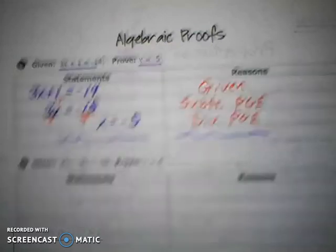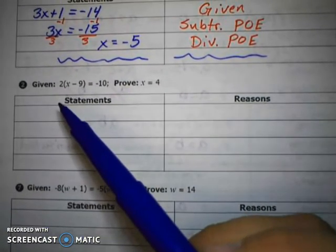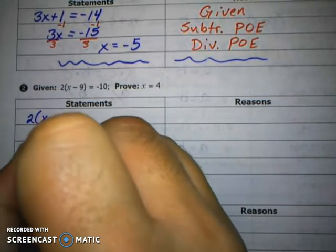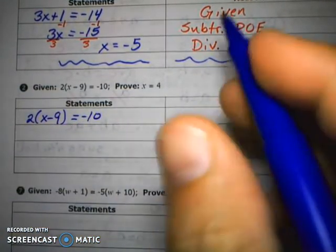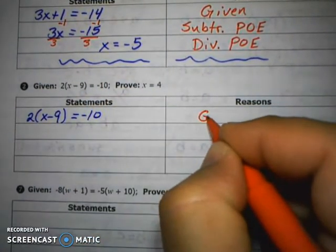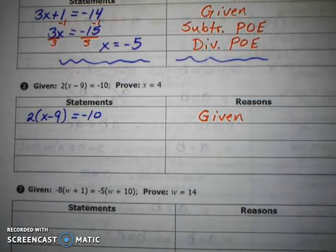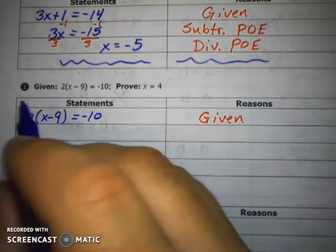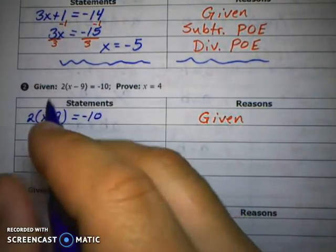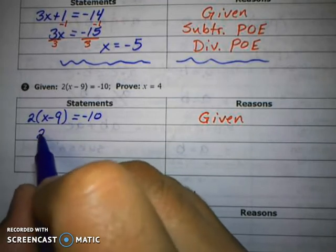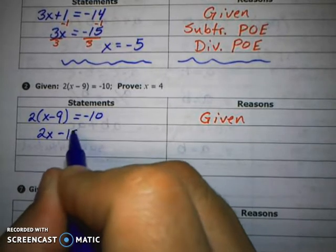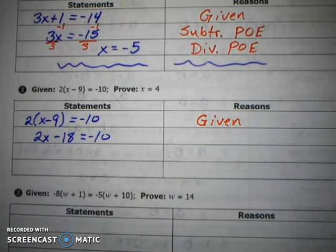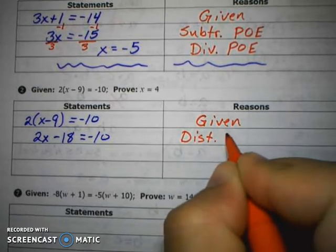So, we're going to try one more problem here. We're going to start with our given statement: 2, parentheses, x minus 9, parentheses, equals negative 10. And our reason, again, you can fill in that first reason. That is our given statement. So, I'll just write it in as given. And now, our first step here, most of you should recognize, is to distribute. And so, I'm going to do this one without showing all these little steps in between. So, when we distribute, we do 2 times the x, and that gives us 2x. And 2 times minus 9 is minus 18. And that equals negative 10. And since I distributed, that is the distributive property. And so, our reason is just distributive, then property.